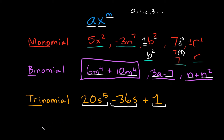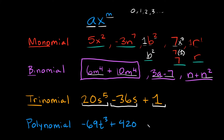Now, what if one of these expressions has more than three terms? Well, that's what you call a polynomial. If it has four or more terms, you simply call it a polynomial. For example, something like negative 69t cubed plus 420t plus t minus 9 — you can see we have four terms: negative 69t cubed, positive 420t, positive t, and negative 9. Whenever you have four or more terms, you simply call it a polynomial. No more special names after that — five terms, six terms, anything more: just a polynomial.